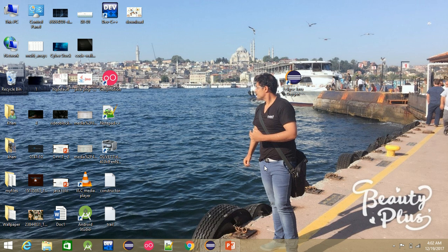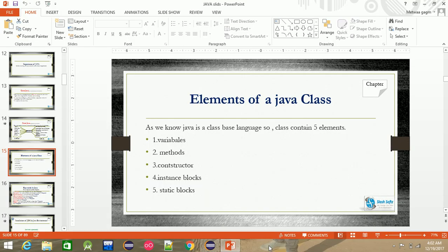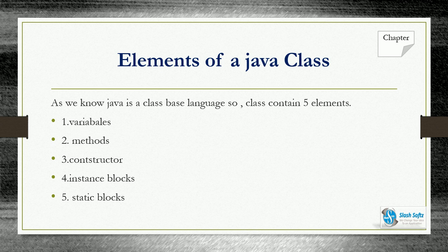Hello everyone. I'm going to show you a video and talk about classes. I'll show you a slide covering the elements of a Java class. The Java class is an important part of Java. As we know, Java is a class-based language, and a class contains five important elements.